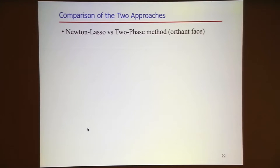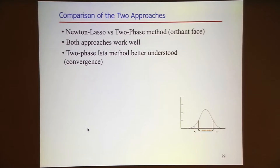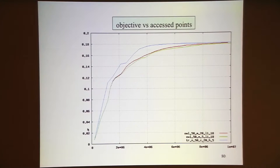Both approaches have shown promise. They're fairly new and have been applied only in some applications. The two-phase ISTA method is going to have easy convergence properties, whereas the infinitesimal approach is dubious—there's a proof for that method but the proof is incorrect, and it is unknown whether the infinitesimal line search really works, but an ISTA line search will work.